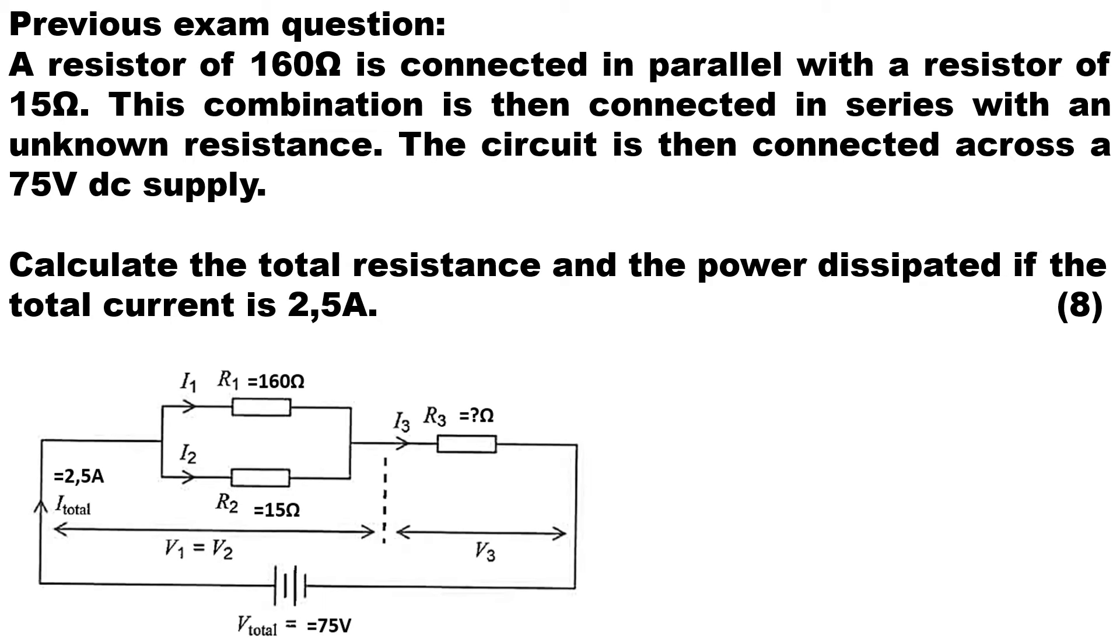Okay, this question comes from a previous exam paper. A resistor of 160 ohms is connected in parallel with a resistor of 15 ohms. This combination is then connected in series with an unknown resistance. The circuit is then connected across a 75 volt DC supply. This question is for eight marks. We need to calculate the total resistance and the power dissipated in the circuit if the total current is 2.5 amps.